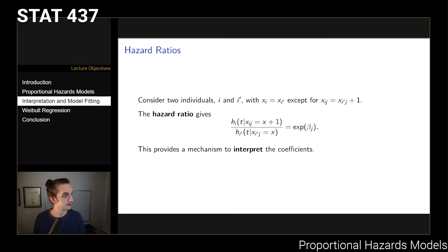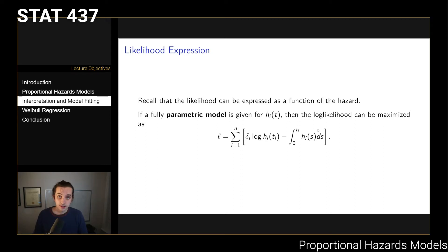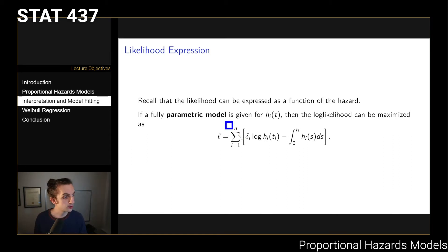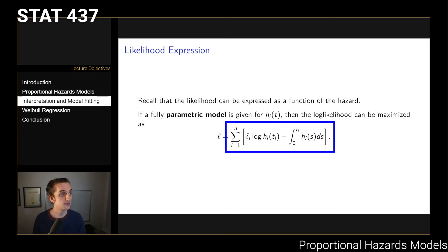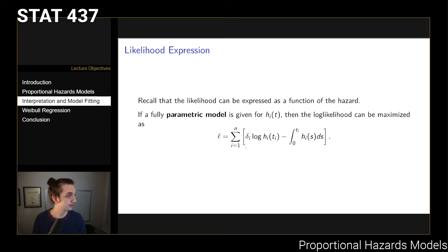Exponentiating the coefficients gives hazard ratios that scale up or down the probability of instantaneous failure. In terms of the likelihood, the log-likelihood can be written as a sum over all individuals of delta i times the log of the hazard minus the cumulative hazard function—the integral of the hazard. So if you've specified a fully parametric model for the hazard, we've fully parameterized the log-likelihood and can use standard likelihood techniques to solve for the relevant parameters.